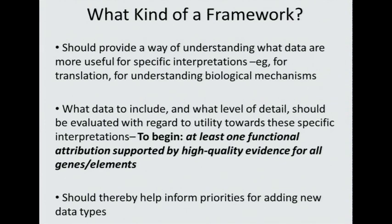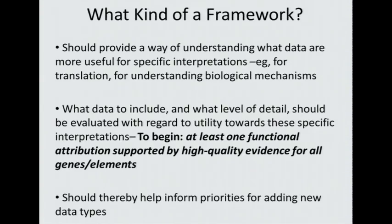What data to include and what level of detail should be evaluated with regard to utility. It was suggested that to begin — and this is just a proposal — to begin with at least one functional attribution supported by high-quality evidence for all genes and elements. Another aspect of a successful framework would be to help inform priorities for adding new data types. You could look at each successive data type added and think about whether it really added enough value, or look at pilot data and ask whether it will truly add to our ability to interpret the data.